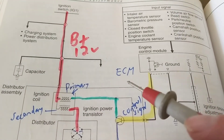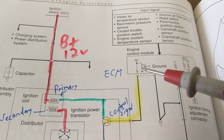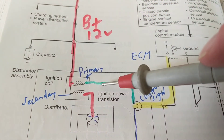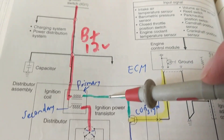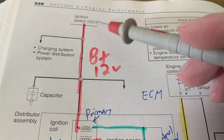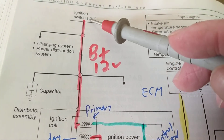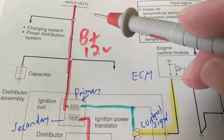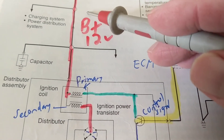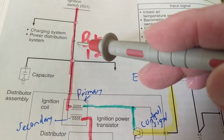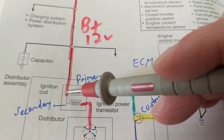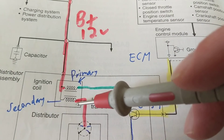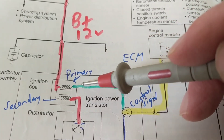I like this diagram because it's easier to understand. As far as the primary of the ignition coil, we still need a switch and we still need a battery — that's basic electronics. The B-plus goes into the primary, and this is the secondary.